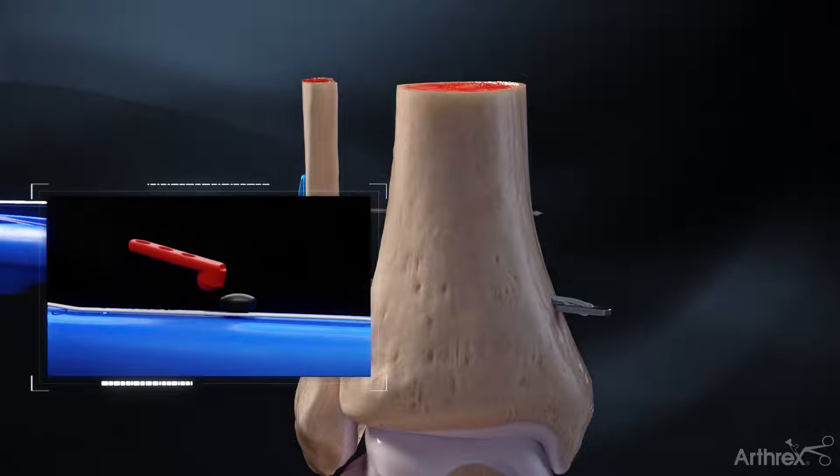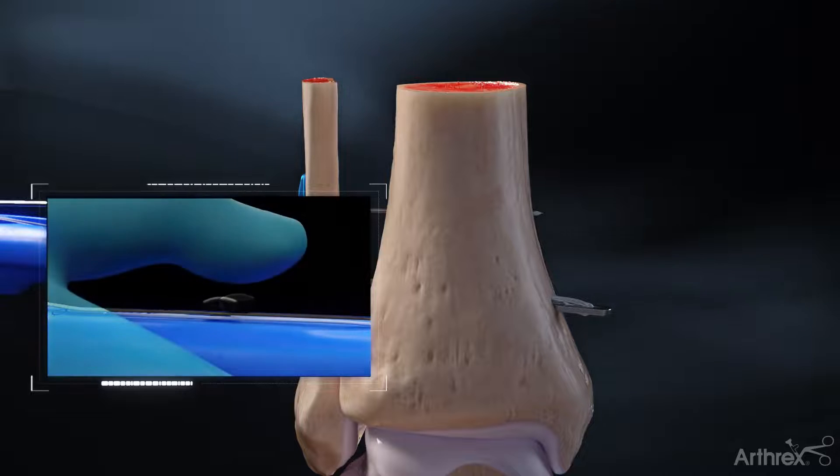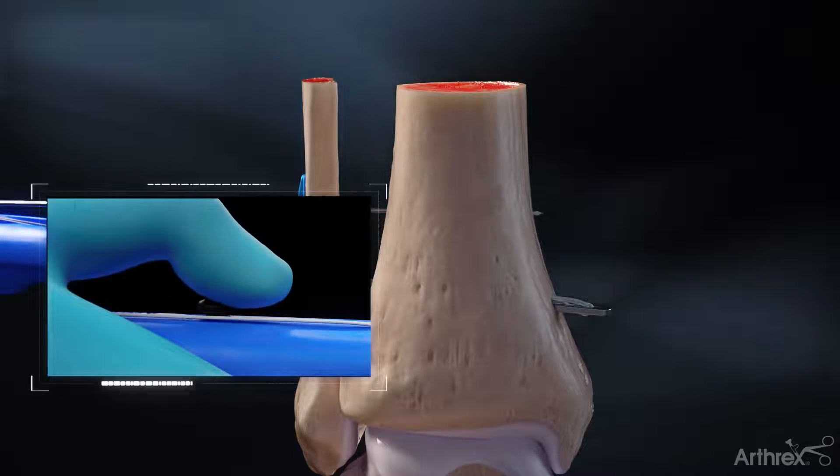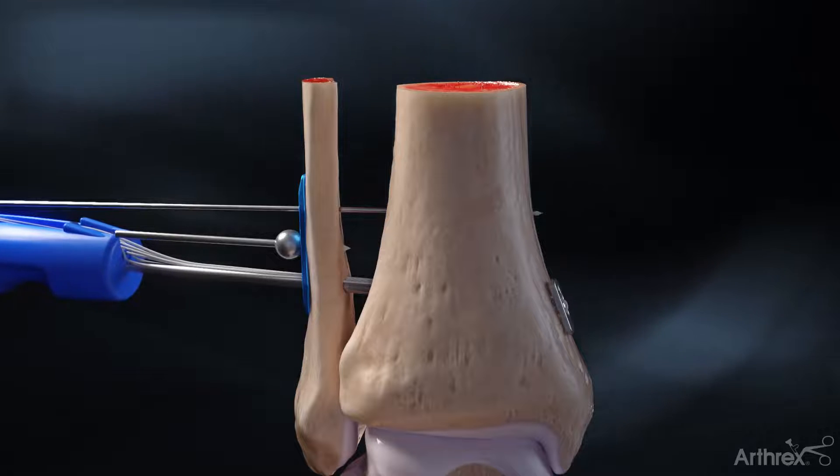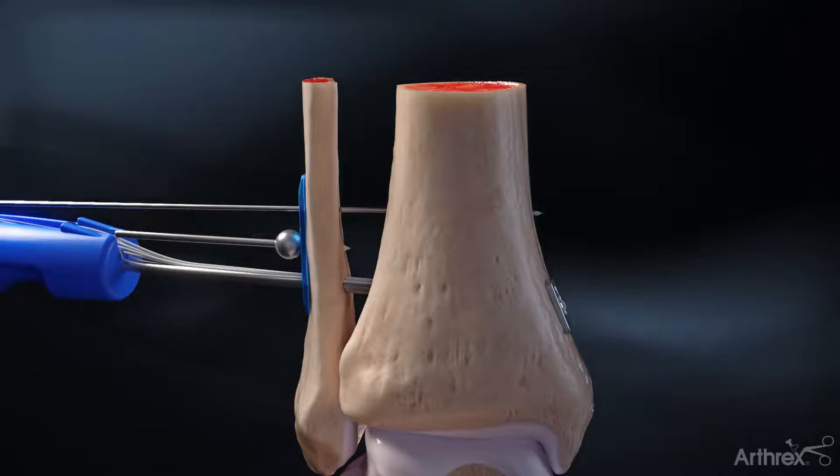Remove the red safety tab. Deploy the black button on the syndesmosis tightrope XP handle. Pull back on the syndesmosis tightrope XP handle to confirm on fluoroscopy the oblong button is flipped and seated flush against the medial cortex of the tibia.